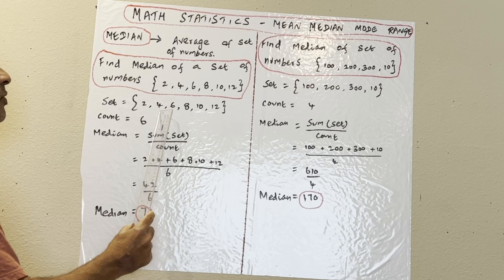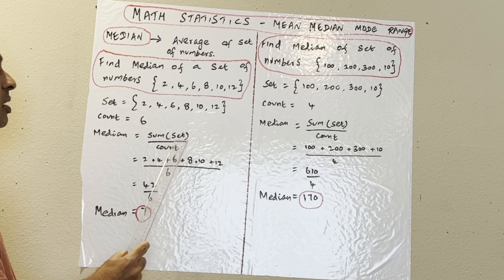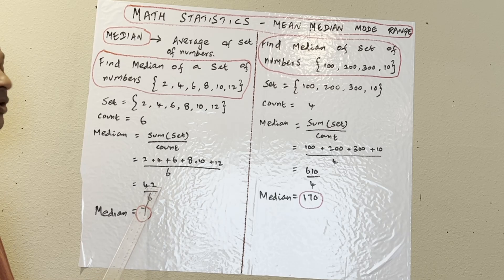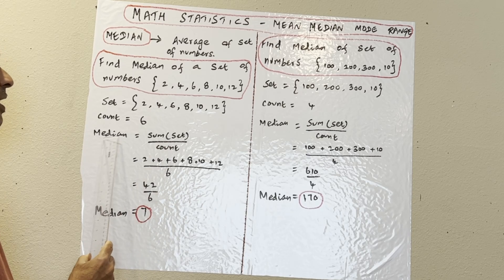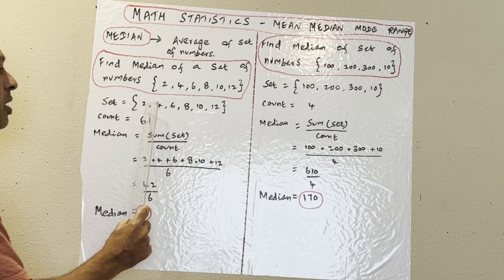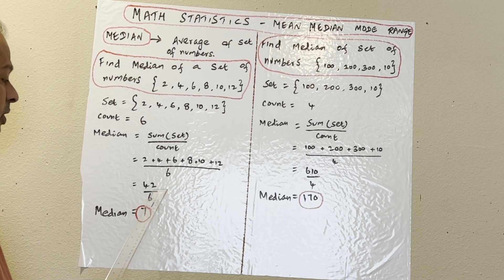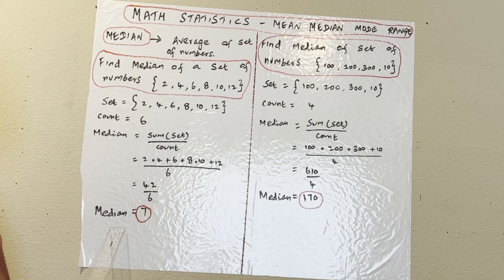So that is 2 plus 4 plus 6 plus 8 plus 10 plus 12. Sum of the set is 42, divided by the count. Mean equals sum of set divided by count. Count is 1, 2, 3, 4, 5, 6 — there are 6 numbers in the set. So 42 divided by 6 equals 7. The mean is 7.